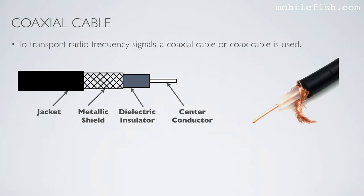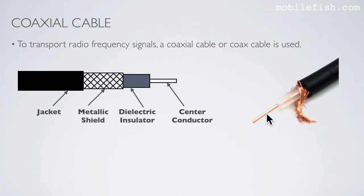To transport radio frequency signals, a coaxial cable or coax cable is used. The coax cable consists of a jacket, a metallic shield, a dielectric insulator, and a center conductor.